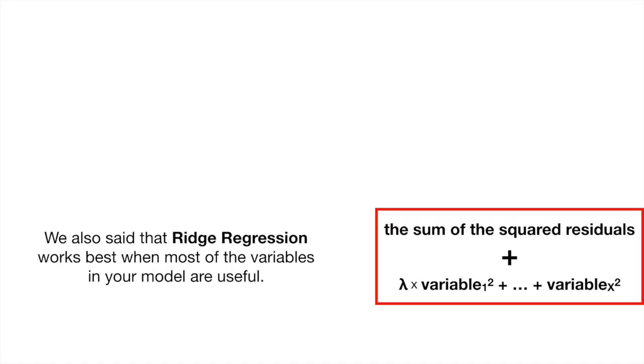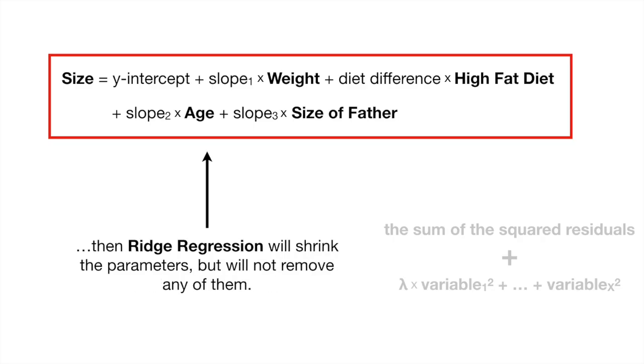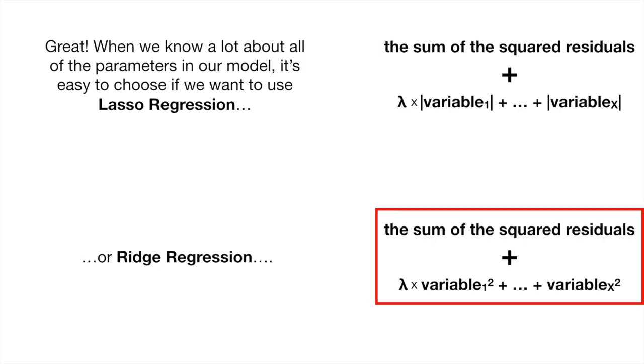We also said that Ridge Regression works best when most of the variables in your model are useful. So if we were trying to predict size using a model where most of the variables were useful, then Ridge Regression will shrink the parameters, but will not remove any of them. Great! When we know a lot about all of the parameters in our model, it's easy to choose if we want to use Lasso Regression or Ridge Regression.